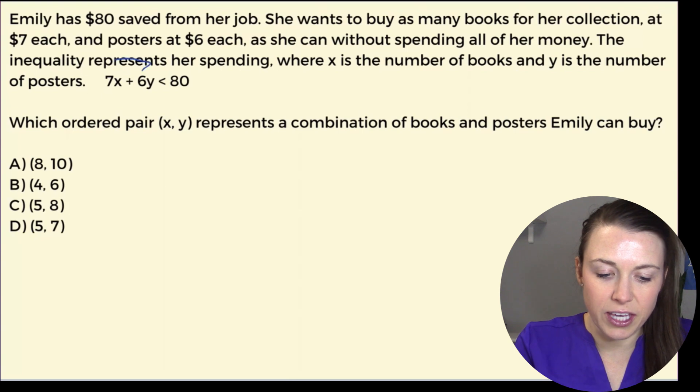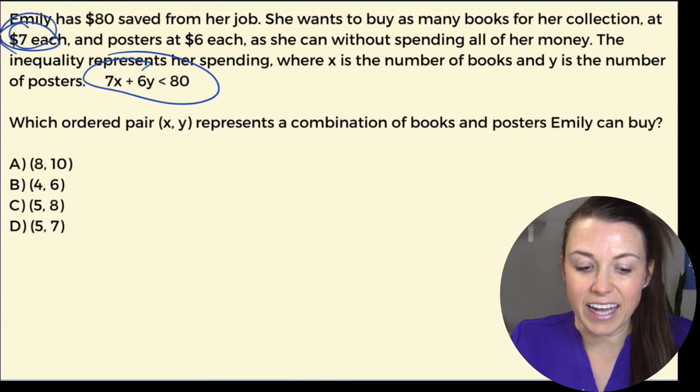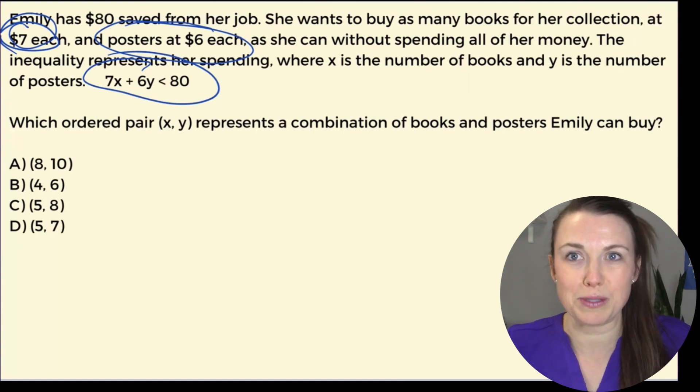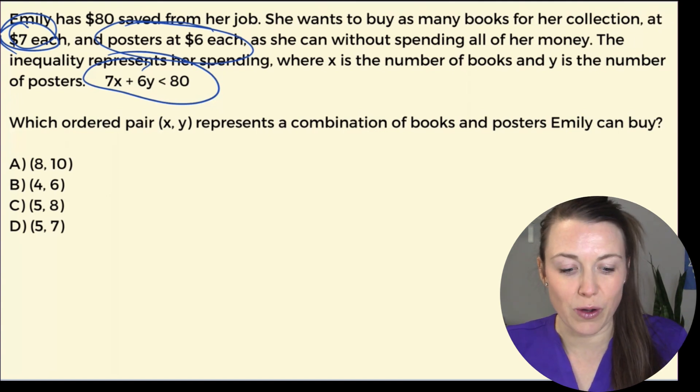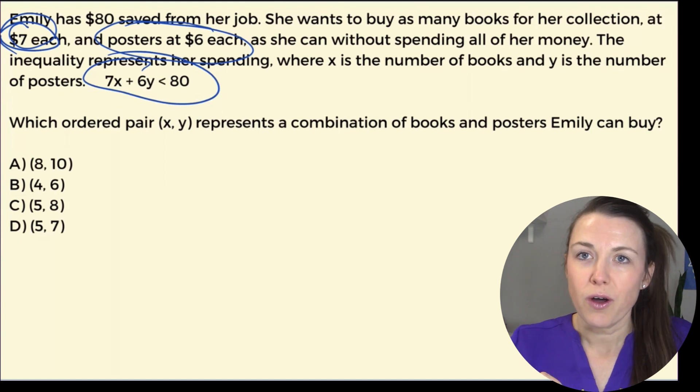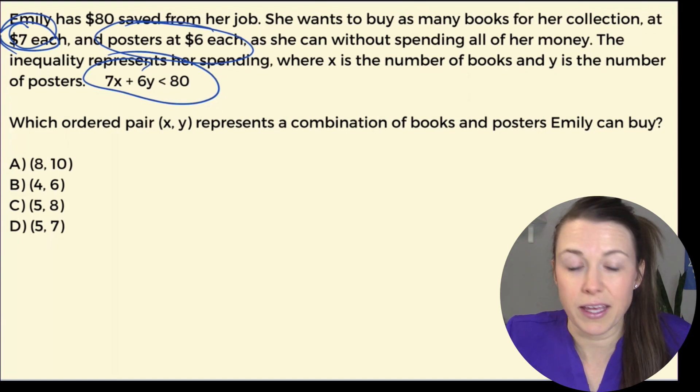Let's take a look here at our equation. I have 7x, and remember 7 comes from this $7, that's how much the books are. So 7x, x would be how many books she's buying, plus 6y. The 6y, those would be those $6 posters. So that y represents how many posters she has. Really what we've got to do is take this just one step at a time and it's a plug and play game.